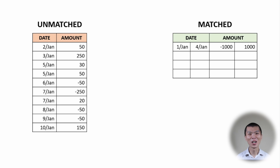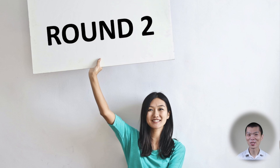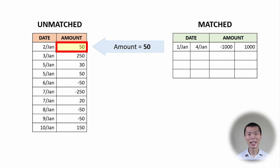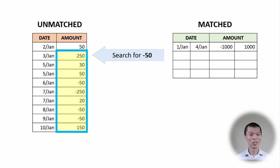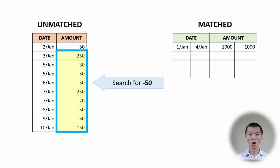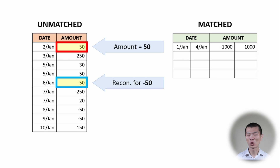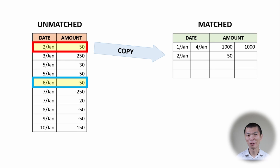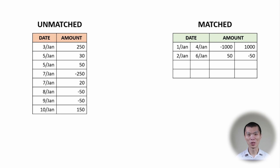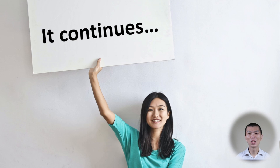After round one, we continue to round two using the same method. We get the first number, which is 50, and search for negative 50 through all numbers beneath it. Once found, the pair is copied to the matched result and removed from the unmatched list. This process continues until it hits the end of the list.